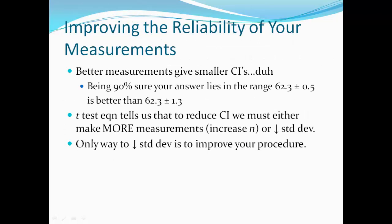So how can you improve the reliability of your measurements? Well, I just mentioned it. If you make more measurements, then that's going to give you smaller confidence intervals. In other words, being 90% sure your answer lies within the range of 62.3 plus or minus 5 is way better than if you say that your answer lies within 62.3 plus or minus 1.3. Of course it is. The range is smaller, so you know that your value lies within a smaller interval. It's better.